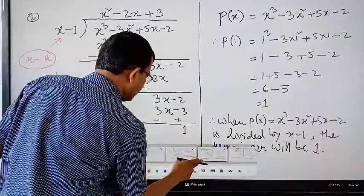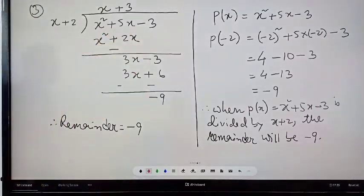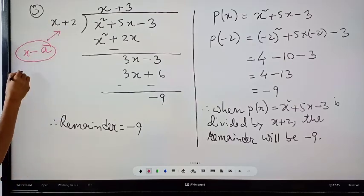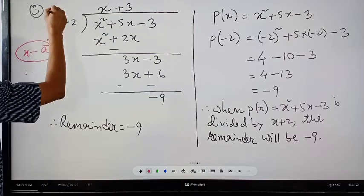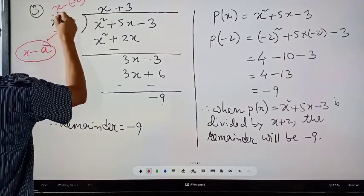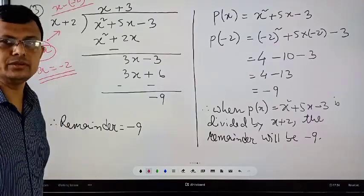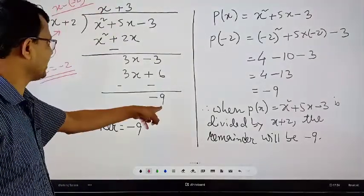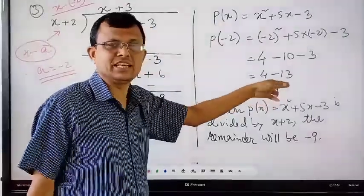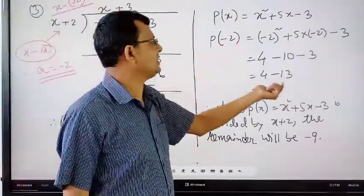Let us see one more example. Suppose x squared plus 5x minus 3 is divided by x plus 2. If you compare x plus 2 with x minus a, this is x minus (minus 2), so a is equal to minus 2. If you divide it, the remainder is minus 9. If you put a equal to minus 2 in place of x in this polynomial, you also get minus 9, which is the remainder of this division.